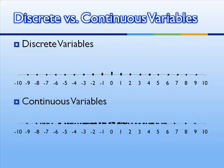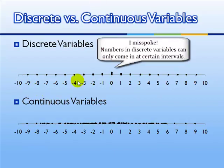A discrete variable is a variable that comes in certain values and not others. So here I have integers, roughly between negative 10 and 10, and in a discrete variable, they can only come in integers.